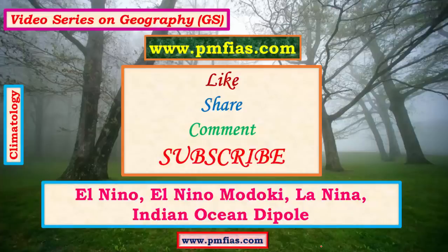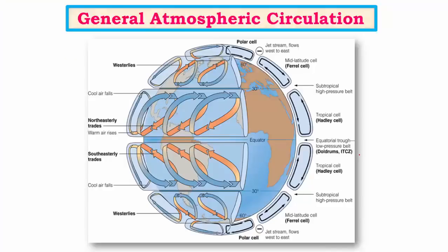Cyclogenesis is nothing but the formation of cyclones. Before studying in detail about El Niño and other concepts, let us first look at some basic concepts like general atmospheric circulation, in which we will see in detail about the Walker cell. We know that there are different atmospheric cells like the Hadley cell, Ferrell cell, and Polar cells. Along with these cells, where there is exchange of heat between various latitudes, we have another similar kind of cell called the Walker cell. In the Walker cell we have heat exchange happening between various points on the same latitude.